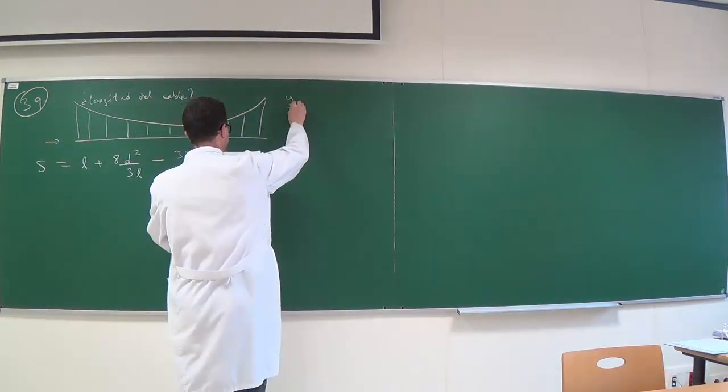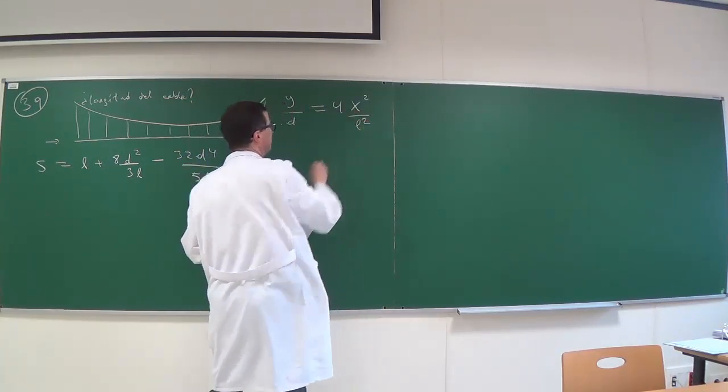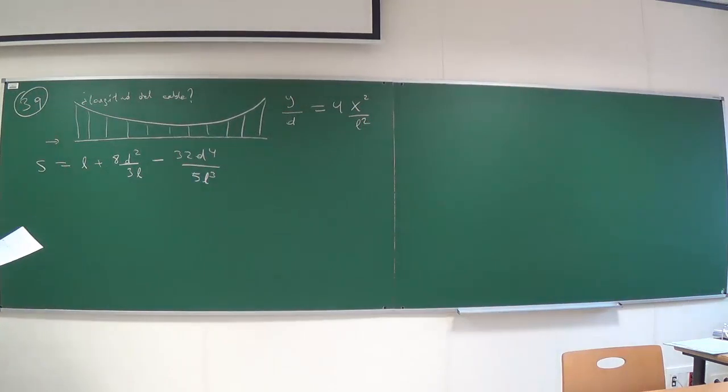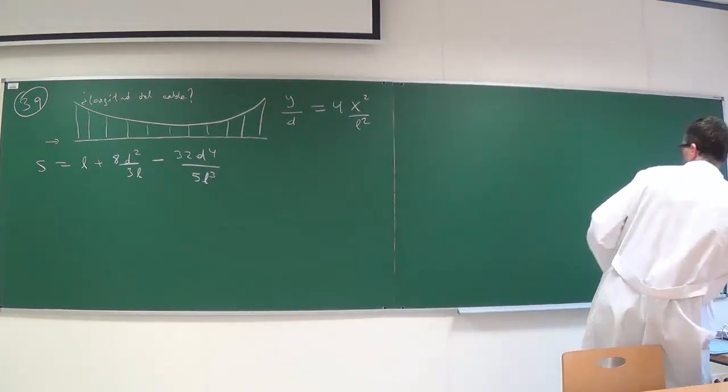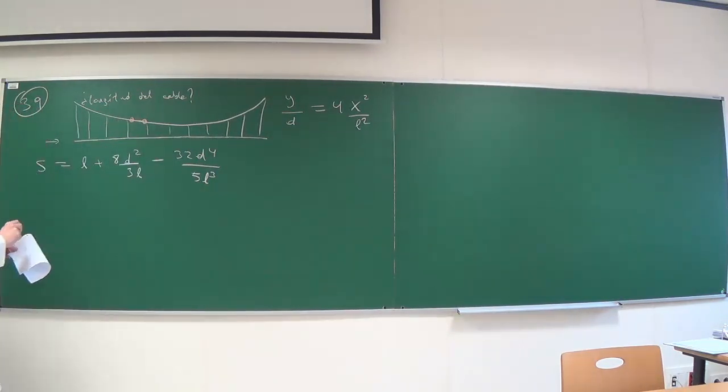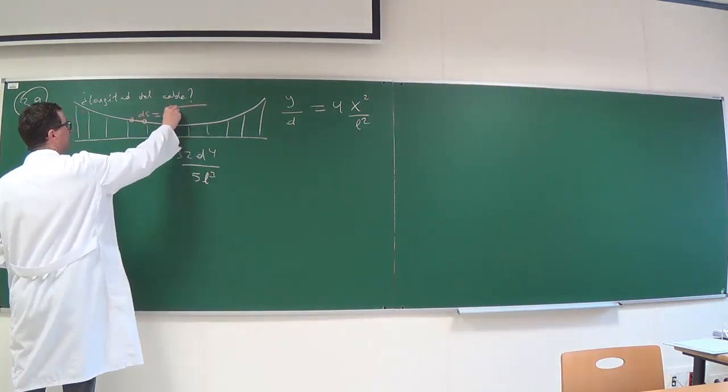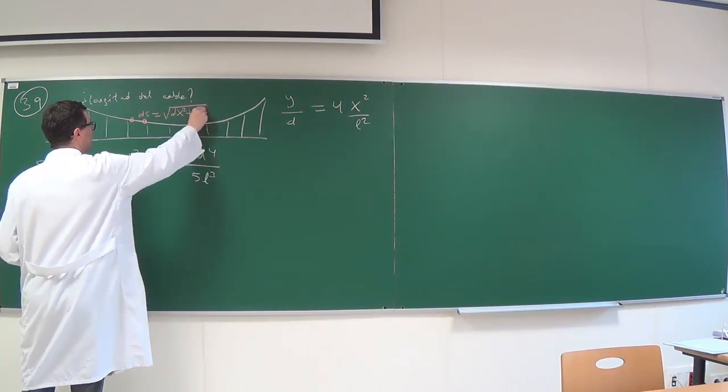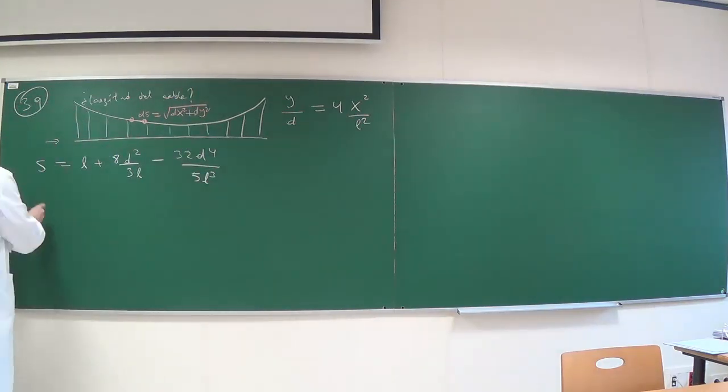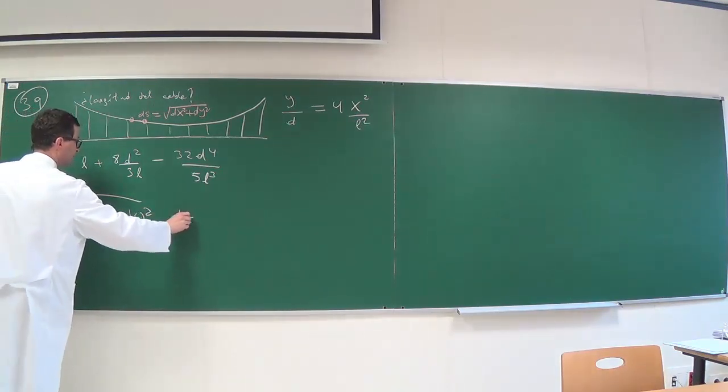We need the equation of the cable, which is Y divided by D equal to 4X² divided by L². And then we apply the Pythagorean theorem. We take a small section of the cable, and if it is small enough, it is approximately a straight line segment. So the differential of S is the square root of the differential of X² plus the differential of Y².